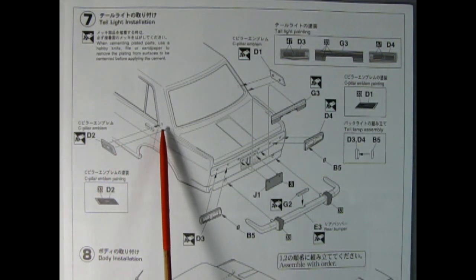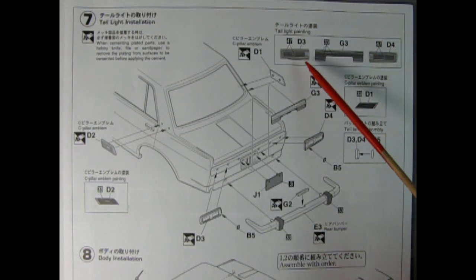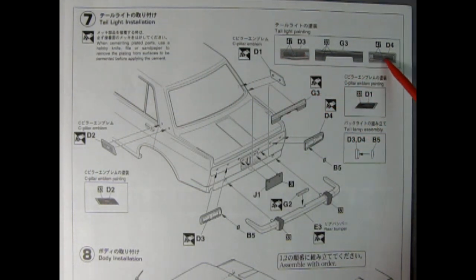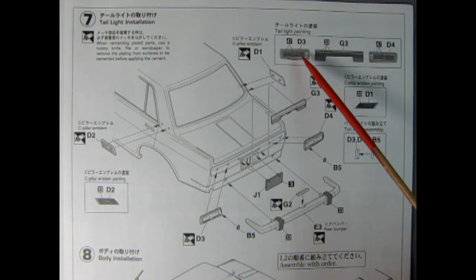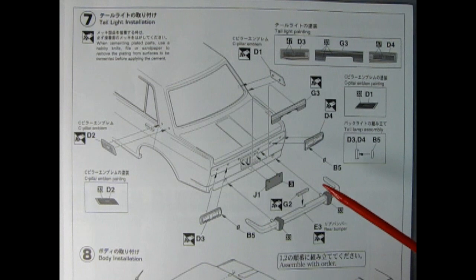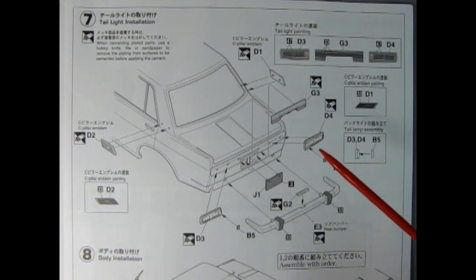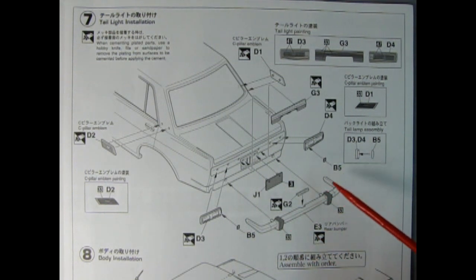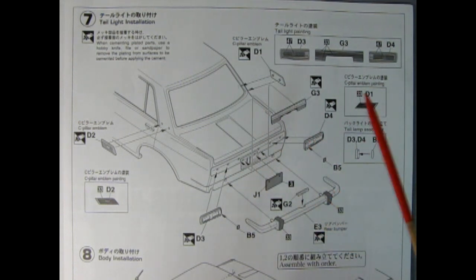Step seven we have the c-pillar emblem that glues on right there. In the back we have our tail lamps. This is the whole painting chart so it shows which colors go in here, probably red in the middle and amber on the right and left hand side. It's been a long time since I've seen my sister's Datsun 510. She had to get rid of the car back in the 90s. Here we have our three piece tail lights. We also have our license plate going in place and our rear bumper as well as this little piece which could be a backup light.